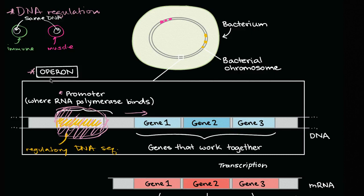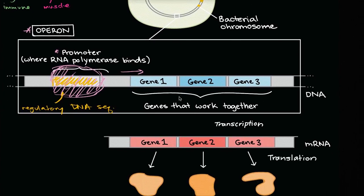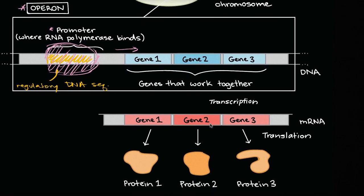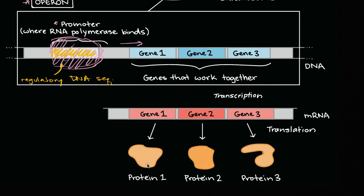When you have a promoter associated with multiple genes, that combination of the promoter and the genes - and I'm talking about sequences of DNA - is called an operon. It's a combination of that regulatory DNA sequence, which signals RNA polymerase to bind and start transcribing, and the genes whose transcription it promotes. That transcription process takes the genetic information in DNA, transcribes it into messenger RNA, which then goes to ribosomes for translation to produce proteins that have functions within or outside of the cell.